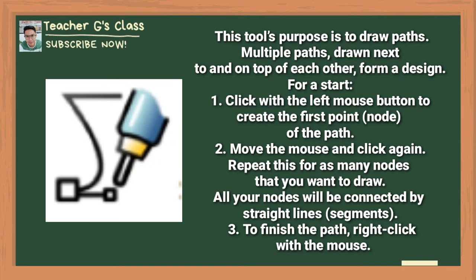This tool's purpose is to draw paths. Multiple paths drawn next to and on top of each other form a design. To start: 1. Click with the left mouse button to create the first point of the path. 2. Move the mouse and click again. Repeat this for as many nodes as you want to draw — all your nodes will be connected by straight lines. 3. To finish the path, right-click with the mouse.